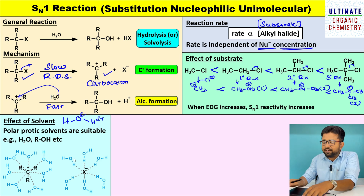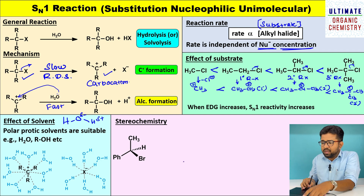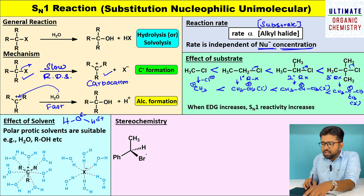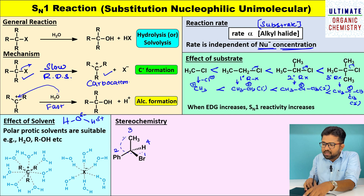Now the last topic is stereochemistry, which is very important. I have taken a molecule here. If you look at the configuration of this molecule: the first priority goes to bromine, second priority goes to the phenyl group, third priority goes to the methyl group, and fourth priority goes to the hydrogen atom. Groups one, two, and three are arranged in clockwise direction, so the configuration of the molecule is R.